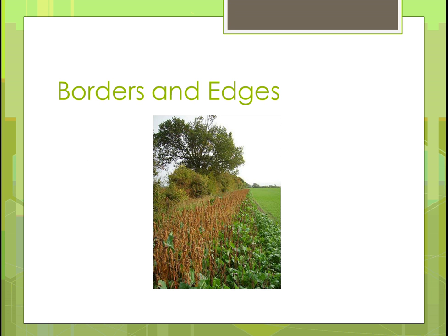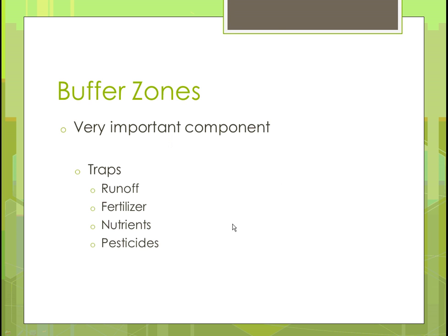Here's an example of a border and an edge. You have your field, then you go into the edge where there are some weeds, then a hedgerow, and then a few trees. That's all the stuff that helps buffer those two areas. The buffer zone is very important because it can trap runoff — if water runs in that direction, it's not just soil that would run off, but also fertilizer, nutrients, and pesticides. The buffer zone keeps those there and prevents them from going into a different area. Testing the soil in those areas would tell you whether you have a lot of runoff and help you control how much you're applying.